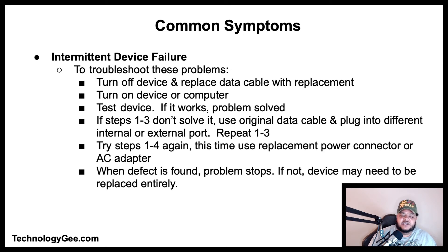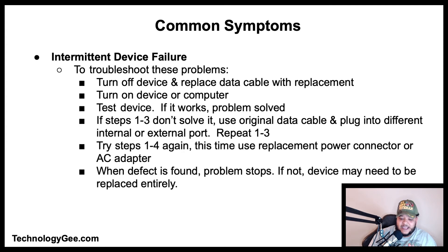Other intermittent failure issues with USB or internal devices could be due to damaged cables, connectors, or ports. To troubleshoot: turn off the device and replace the data cable with a working replacement, then turn on and test the device. If it works, the problem is solved. If not, use the original cable and try a different internal or external port. Repeat testing. Then try again using a replacement power connector or AC adapter. If the problem is not resolved with different cables or power supplies, the device itself needs to be replaced.